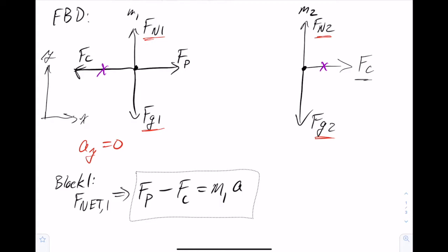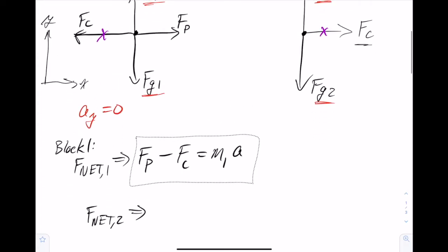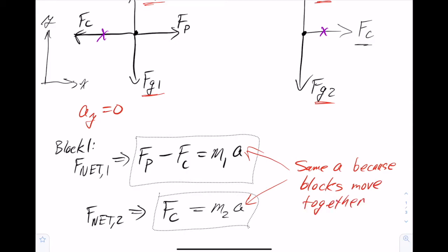Now we can do the same thing for block 2. F net 2. Well, there's only one horizontal force, so that's just going to be the contact force, and that is pointing to the right, so I write it down with a positive sign. And then that's going to be equal to ma for block 2, so that's mass 2 times the acceleration. Now, how do I know that the accelerations are the same? Well, they better be the same because I've written it down with just a, but they're the same acceleration because the blocks are moving together. As you're pushing on the block, they both move at the same velocity at all times, so their accelerations are going to be the same.